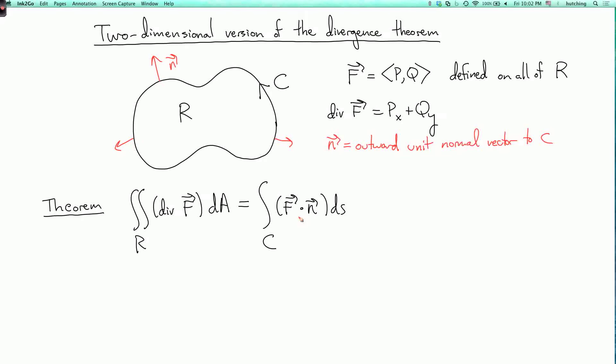So N looks like this. Now, in the integral of F dot dr, you are measuring how much the vector field is pointing in the same direction as the curve. In this integral, you're doing something else. You're measuring how much the vector field is perpendicular to the curve and pointing outward.